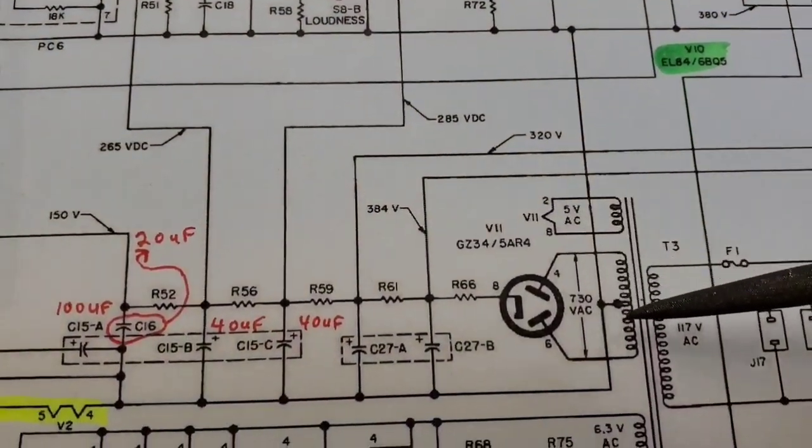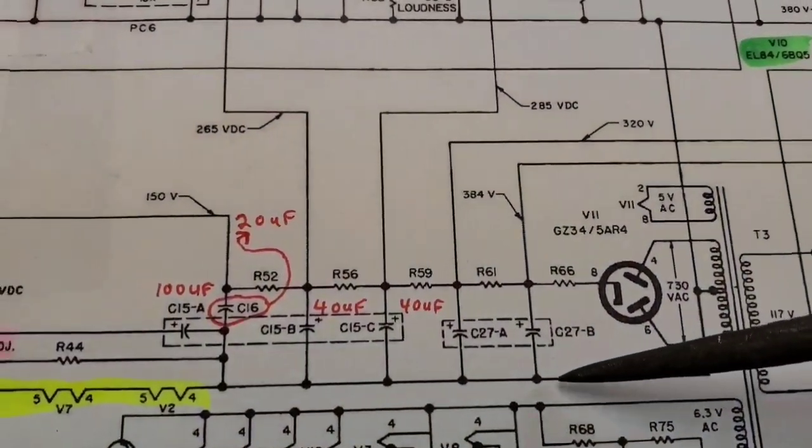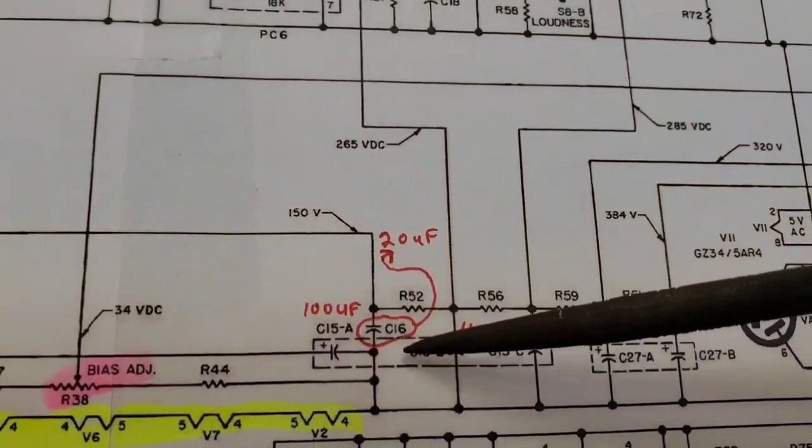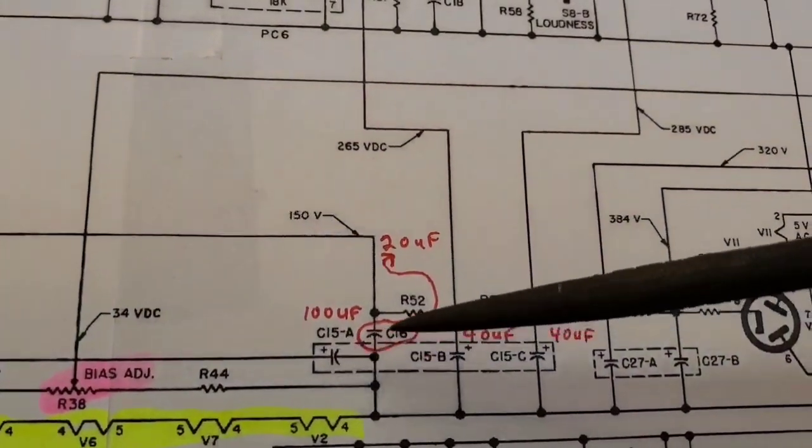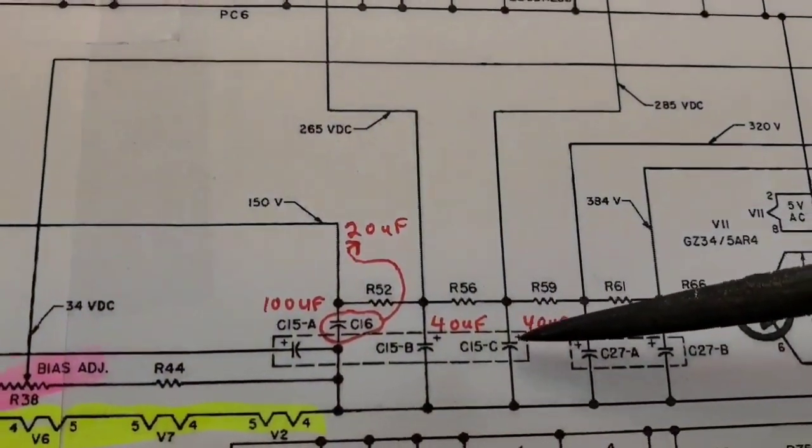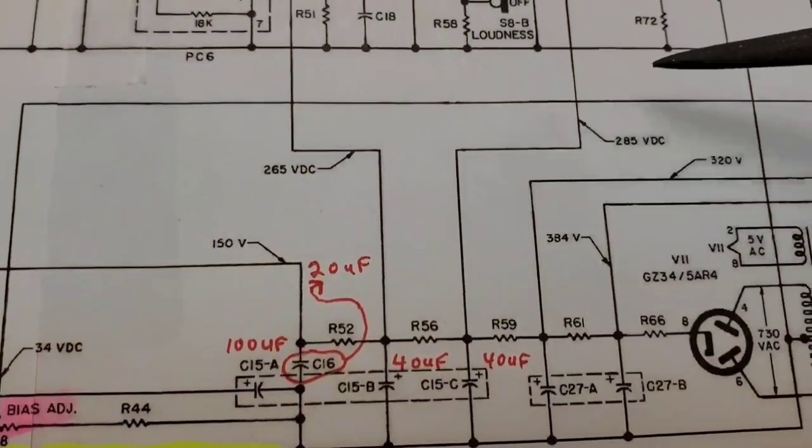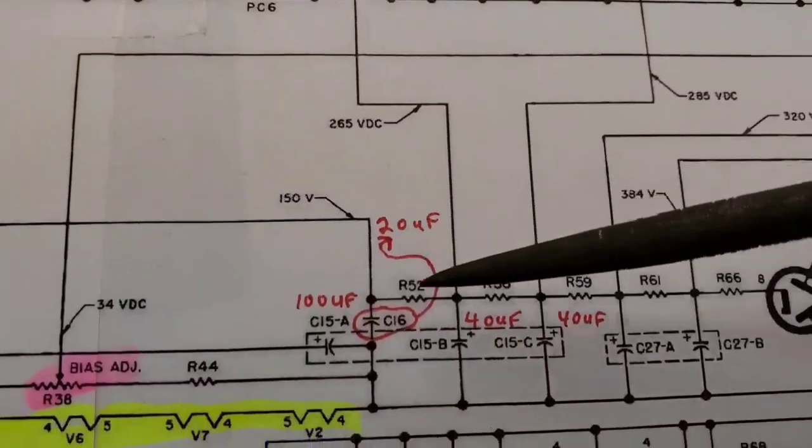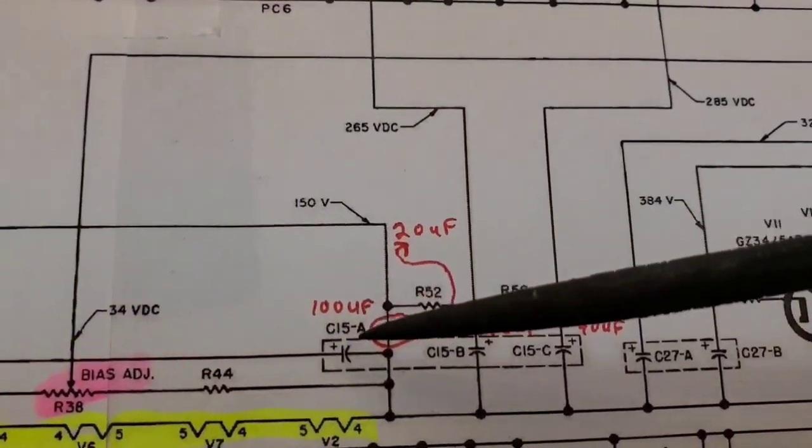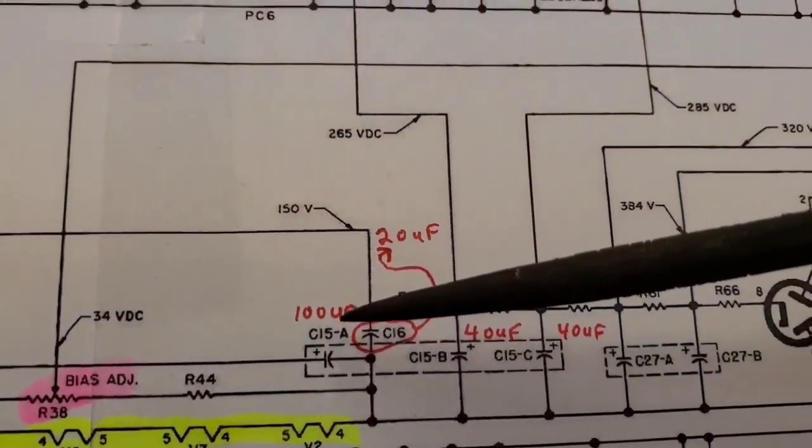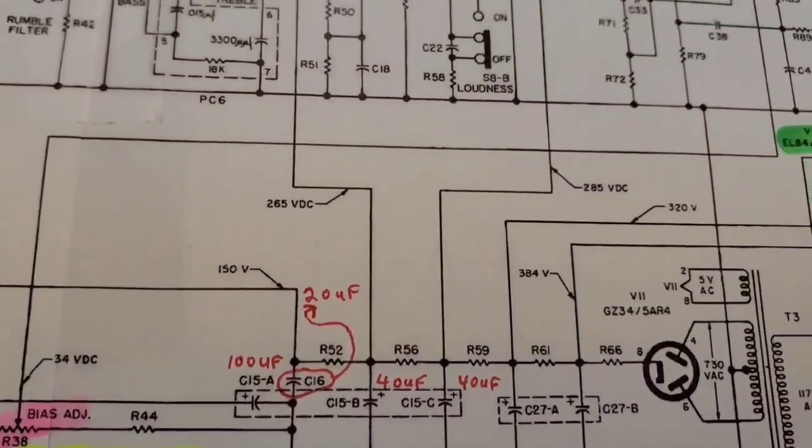Sometimes what I'll do, I'll actually draw a ground here just to make it easy so I don't get confused. This is another filter cap. So you have one section, two sections, three sections. This section is 40 microfarads. These are high voltage because they have to filter the power supply. This one is not high voltage. This is part of the bias circuit, which we'll get into in a second.